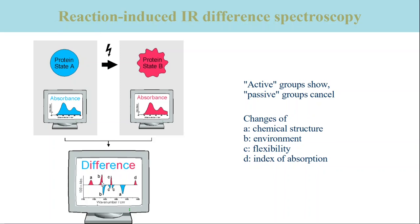A difference band with side lobes of opposite sign is produced when the width of a band changes in the reaction from state A to state B. The case where a band width decreases is shown in the bottom spectrum for the bands marked with C.